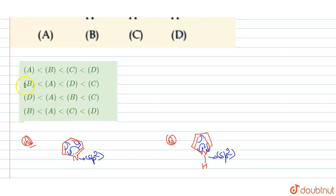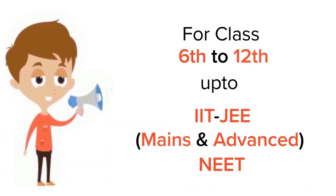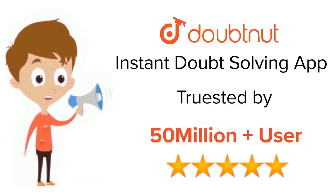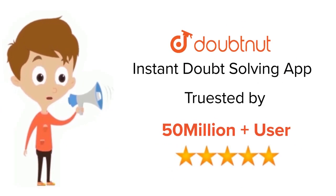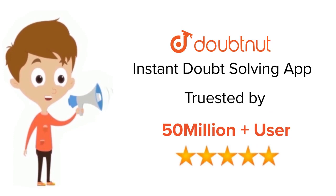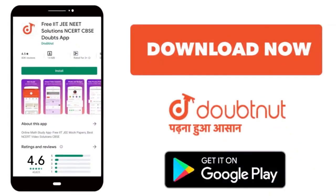So the final answer is: the increasing order of basicity is C greater than D greater than A greater than B. Option B is the correct answer. Thank you. For class 6 to 12th, IIT-JEE and NEET level, trusted by more than 5 crore students — download DoubtNet today.